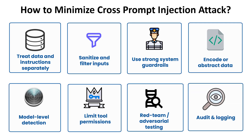Eighth, audit and logging: keep detailed logs linking answers to the output sources that influence them, and use logs to trace and investigate any suspicious or unintended outputs. Last but not least, human review for high-risk outputs: have a human check outputs that could reveal secrets or trigger critical actions, and use this review as a final safeguard before executing sensitive operations.